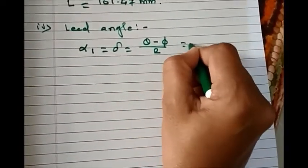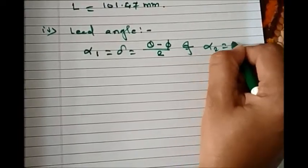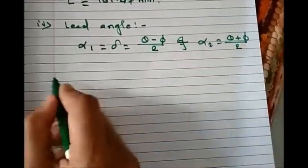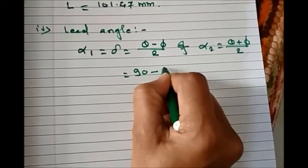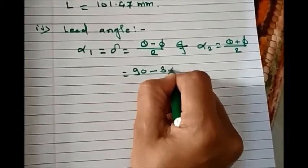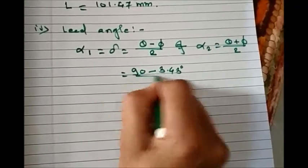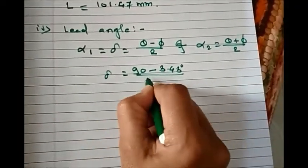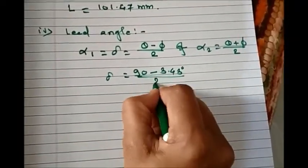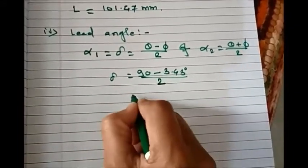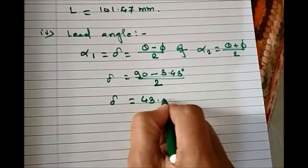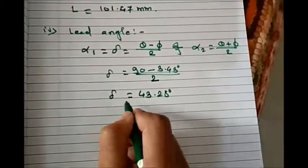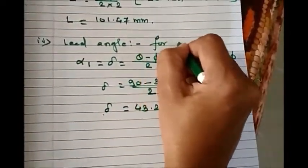Now let's put the values. Theta is 90 minus phi is 3.43 degrees. So delta equals 90 minus 3.43 divided by 2. So we get delta equals 43.28 degrees, the lead angle for maximum efficiency.